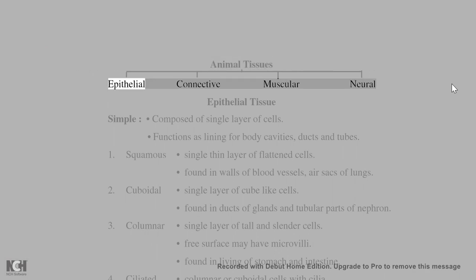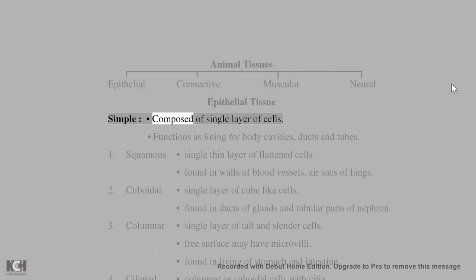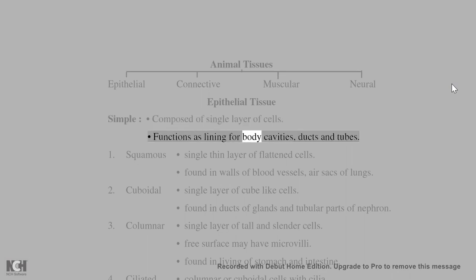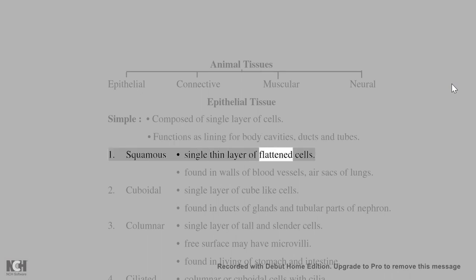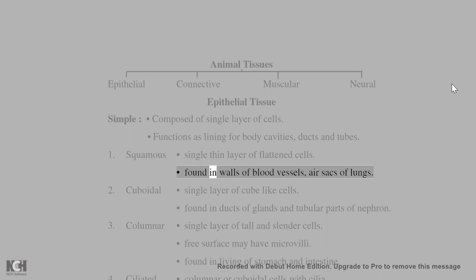Animal tissues: epithelial, connective, muscular, neural. Epithelial tissue — simple: composed of a single layer of cells; functions as lining for body cavities, ducts, and tubes. Squamous epithelium: a single thin layer of flattened cells, found in walls of blood vessels and air sacs of lungs.